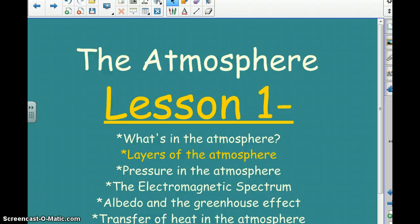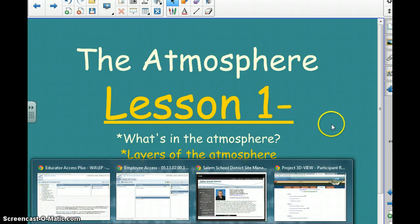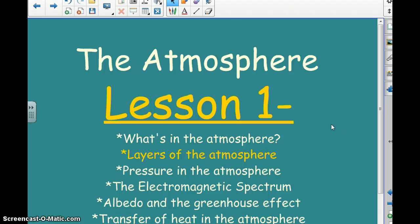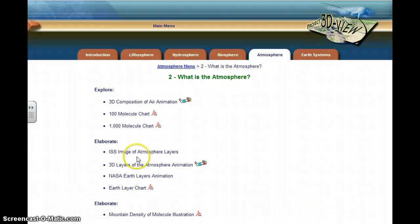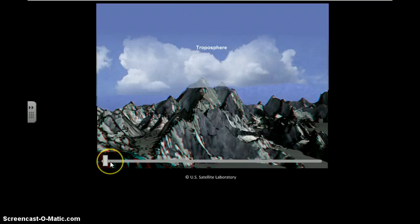Lesson two of the atmosphere is titled the layers of the atmosphere. Here we're going to talk about what you're going to be responsible for is knowing all the different layers in their order and you're going to have to know at least a couple things, factors or characteristics of each one before we're done. So we're going to watch this animation of the layers of the atmosphere and then we're going to get into some more of the details.